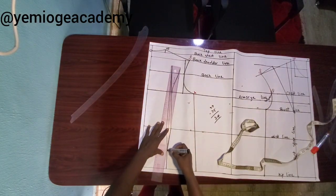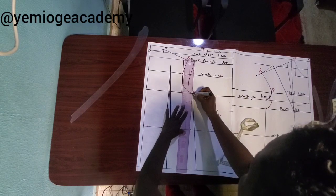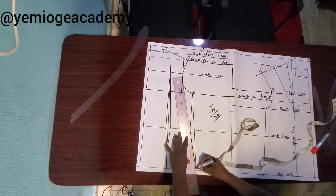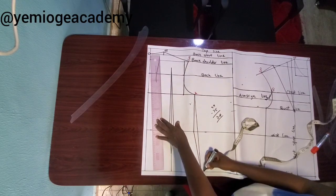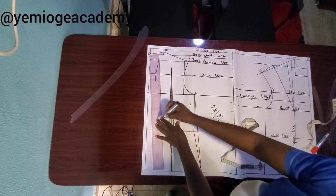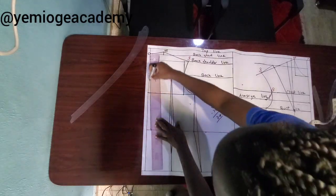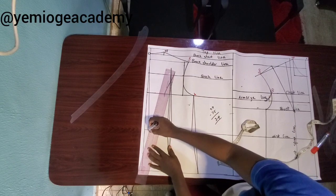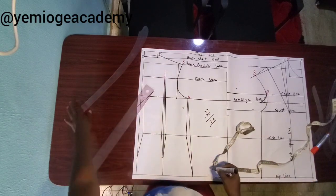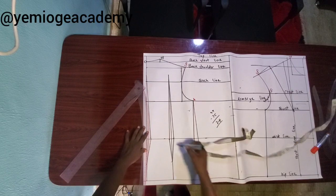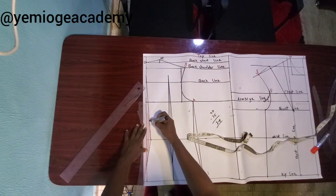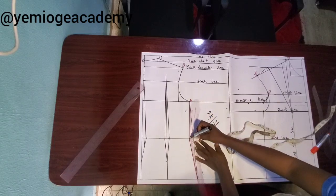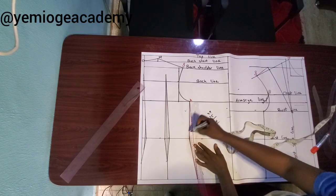I'm going to be shaping the side seam with 0.8. The center dart is 0.8, and the center back dart is also 0.8. The center back dart is necessary for the curve of the back — it removes bulge. I'll use my curve to blend the sharp edges. Always blend your sharp edges. So we're done with the back darts.